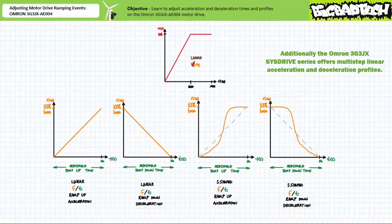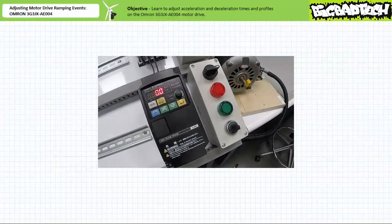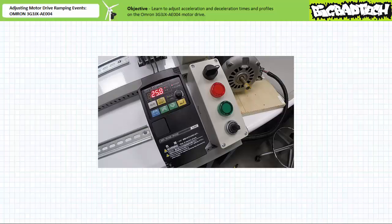The default profile for both acceleration and deceleration is linear with a default value of 10 seconds. For an unloaded motor, this default acceleration and deceleration profile and time is evident, but rather undramatic. When an operator presses run with the external speed potentiometer knob pegged fully clockwise, the motor drive linearly increases applied frequency to 60 Hz over 10 seconds. When an operator presses stop, the motor drive linearly decreases applied frequency to 0 Hz over 10 seconds. The motor decelerates and turns off — evident but undramatic.